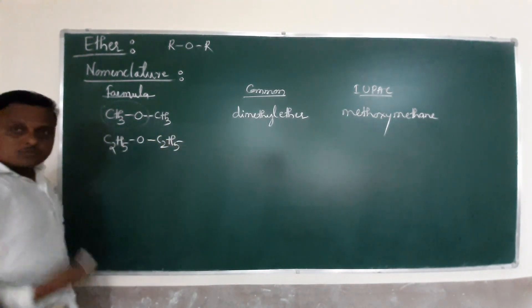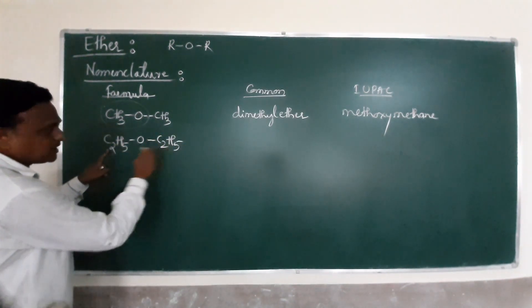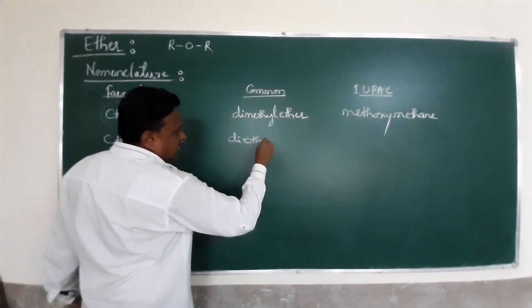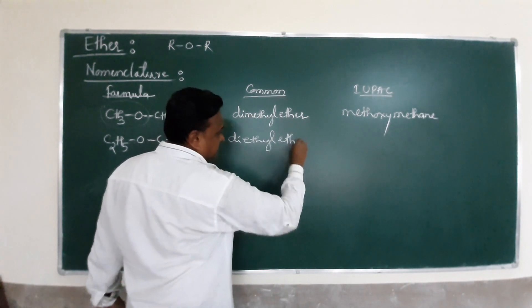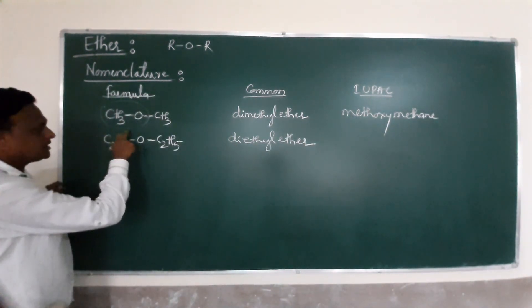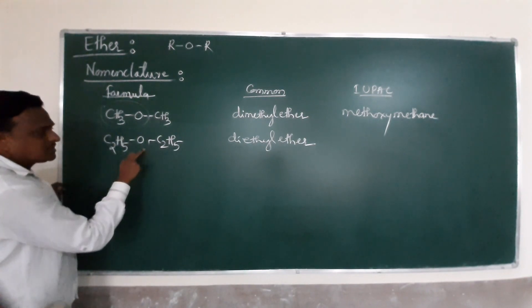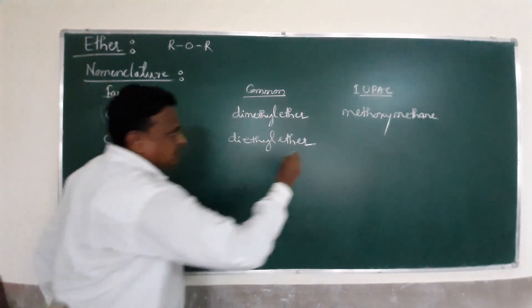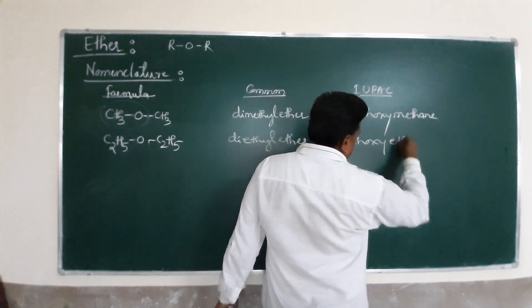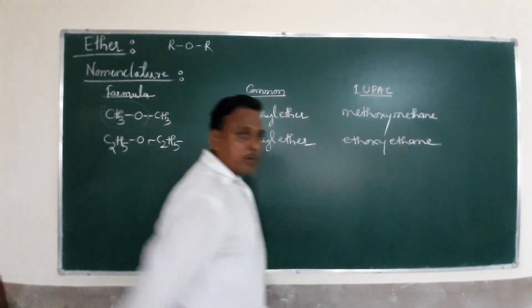We consider another example with simple, same groups. C2H5-O-C2H5. Both are ethyl groups. The common name is diethyl ether. This term is alkoxy, this term is alkane - ethoxy ethane.